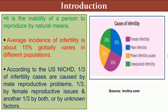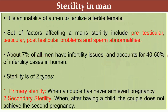Another one third of infertility cases are caused by both or by unknown factors. This diagram shows different percentages of causes responsible for infertility — female reproductive problems, male reproductive problems, mixed infertility causes, or unexplained infertility. There may be different types of reasons which may cause infertility.